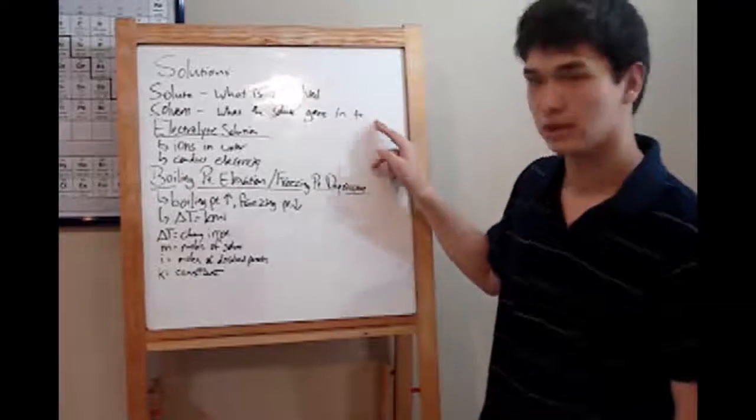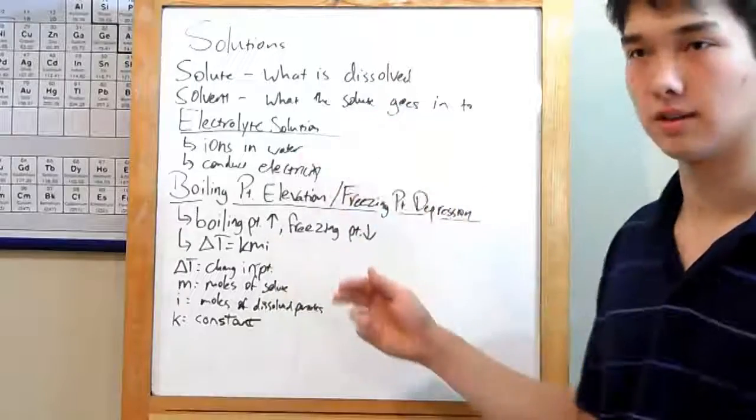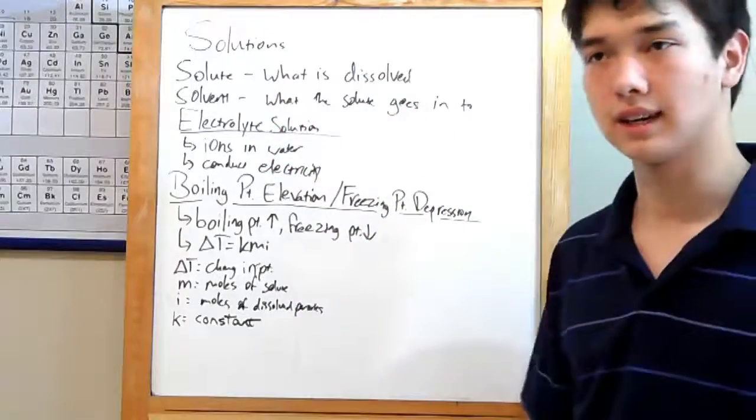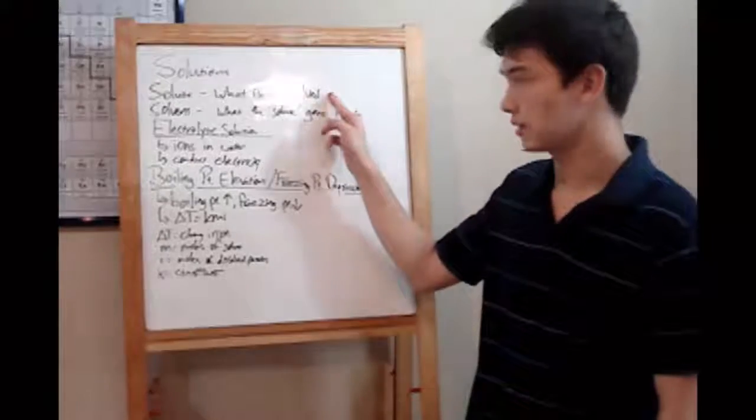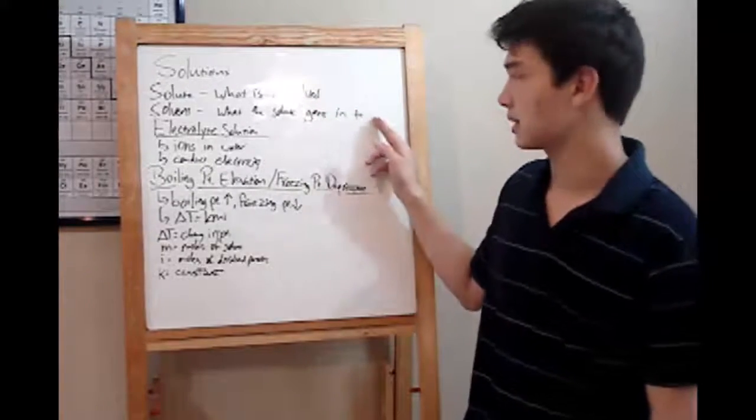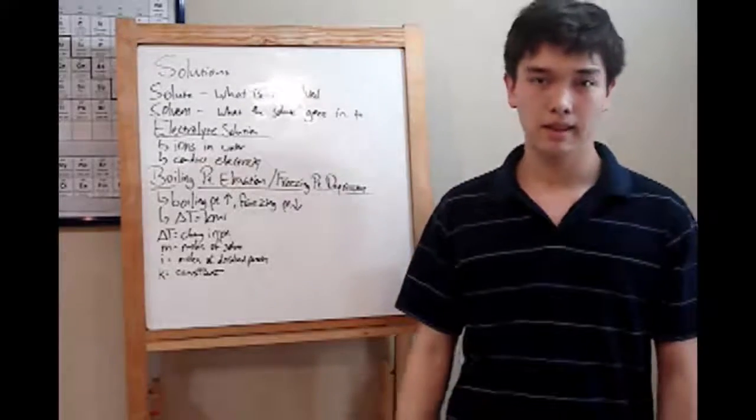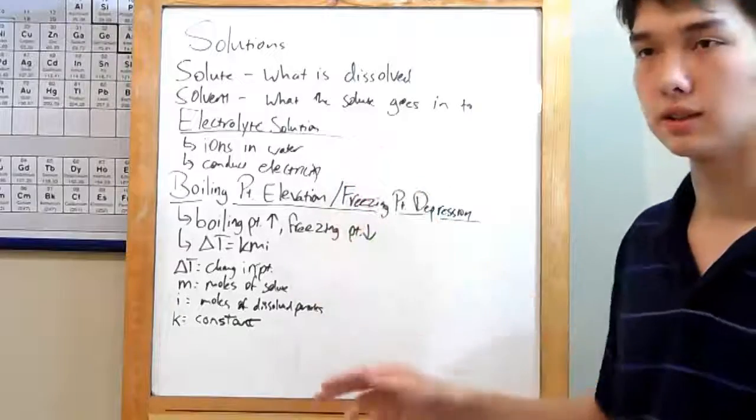There are two main parts to one of those kinds of solutions. Your solute, what you're dissolving, and your solvent, what you're dissolving it into. For instance, salt and water. Salt is what you're dissolving. It's your solute, and water is what you're putting it into, a solvent.